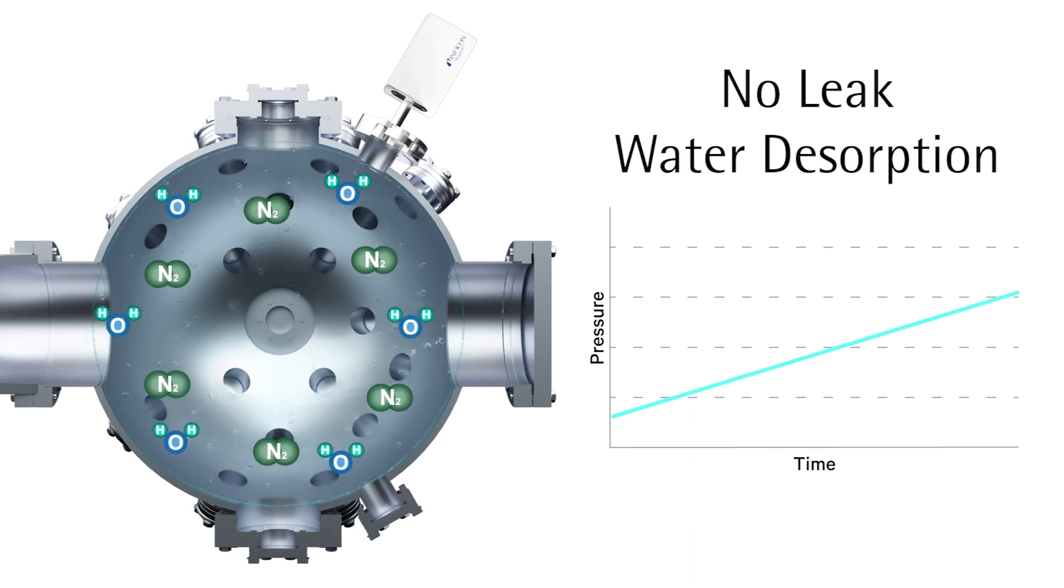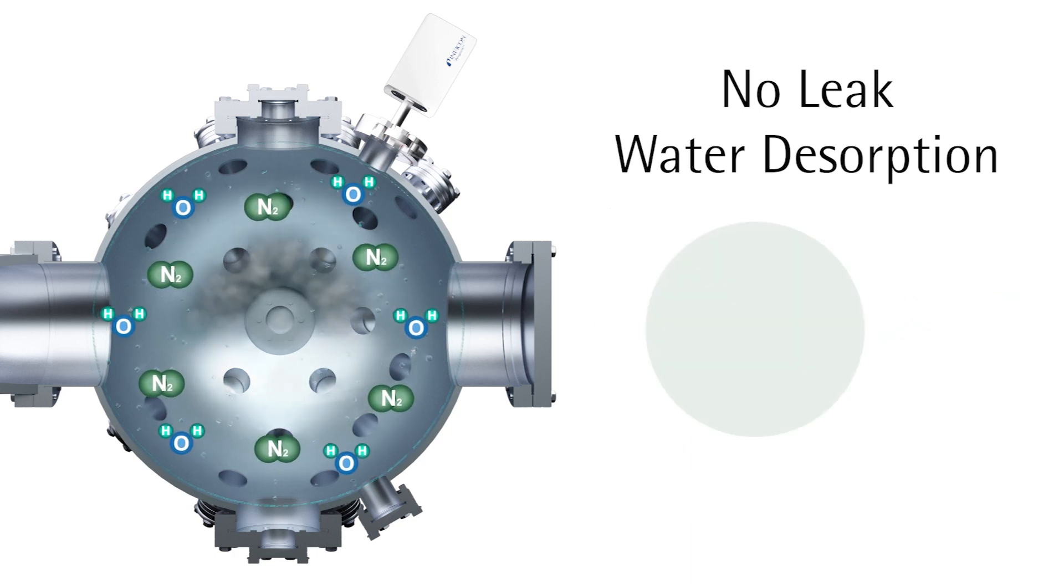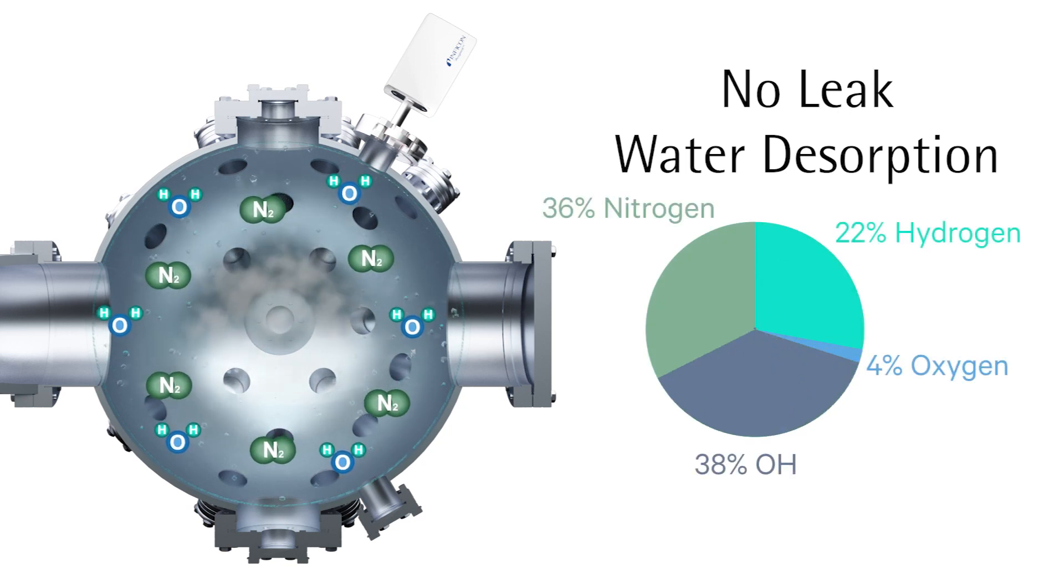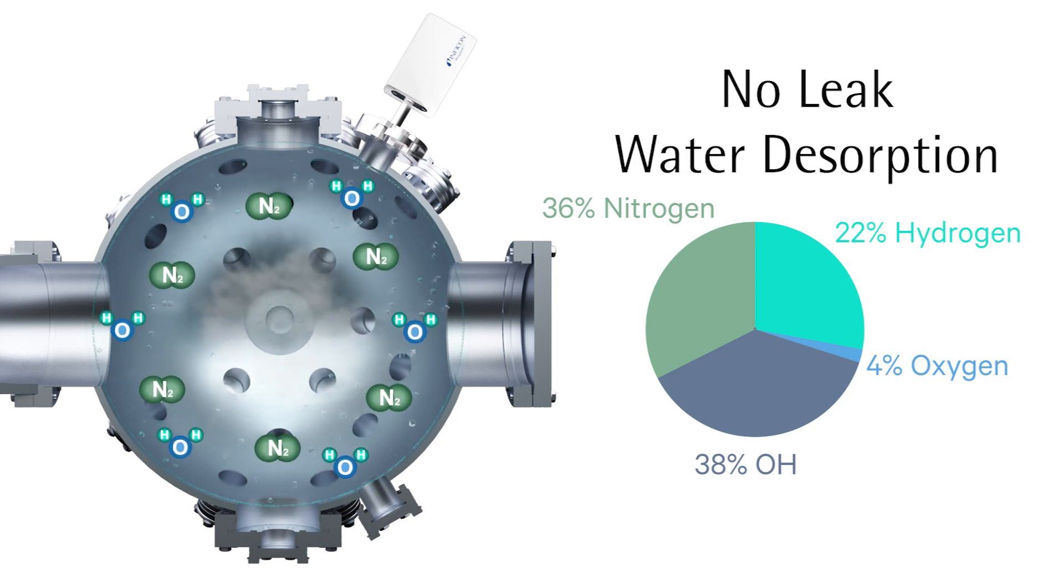Moreover, the gas composition changes, for example by an increase of the water components hydrogen, oxygen, and hydroxide. Based on the gas composition, the distinction from an air leak is therefore possible.